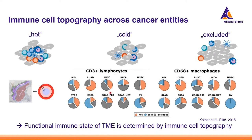For example, in lung adenocarcinoma, one third actually shows the excluded type for CD3-positive lymphocytes. However, for macrophages, you do not find this excluded topography. The functional state has an impact on treatment and progression, depending on which and how many cell types you find in the tumor microenvironment.